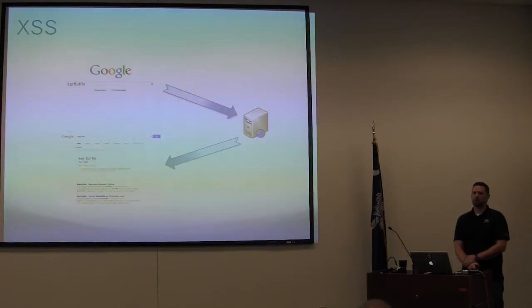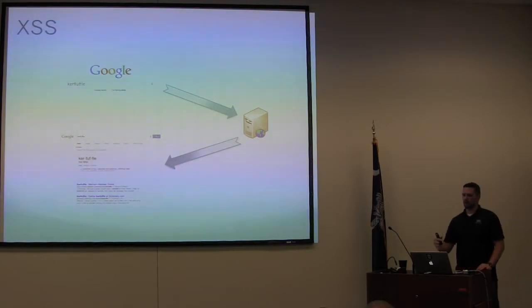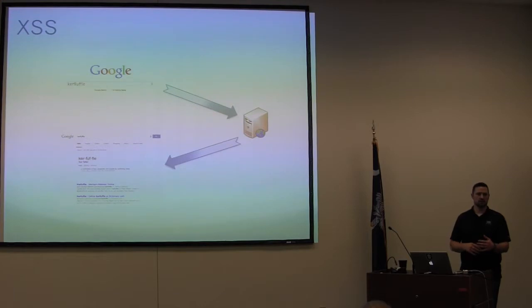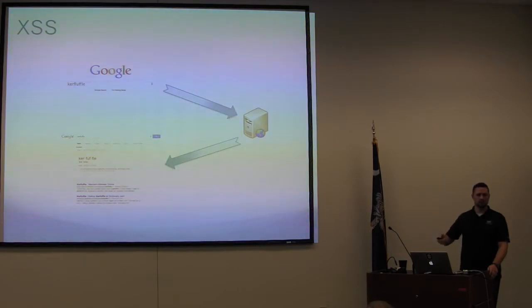Later, people realized there was a third type of cross-site scripting called DOM XSS — Document Object Model cross-site scripting. For anyone familiar with JavaScript, the DOM is the way JavaScript looks at what the browser is doing with the web page. Every element on the page is an object with a specific identifier, so JavaScript can alter anything on the page at any time. DOM XSS is neither stored nor reflected — it executes directly in the browser and never leaves the victim system.